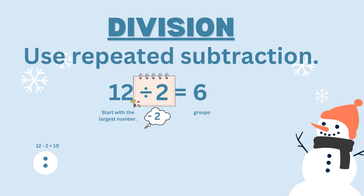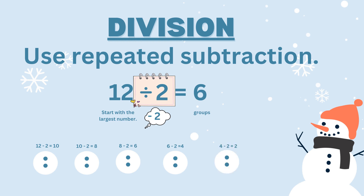So let's keep going: 10 minus two equals eight; eight minus two equals six; six minus two equals four; four minus two equals two; two minus two equals zero. How many times did we subtract two? That's right, we subtracted two six times. So 12 divided by two equals six.